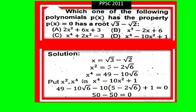polynomials p(x) has the property p(x) = 0 has a root √3 - √2? Solution: first of all, let's suppose x = √3